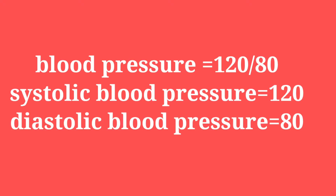Now, how do we describe or say our blood pressure? We say our blood pressure in two parts — we tell it as 120 millimeter of mercury by 80 millimeter of mercury. The higher value depicts the systolic blood pressure of the patient and the lower value depicts the diastolic blood pressure of the patient.